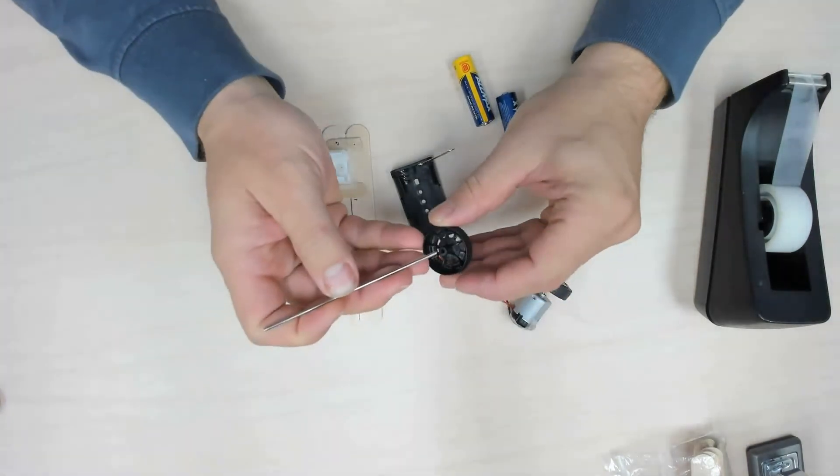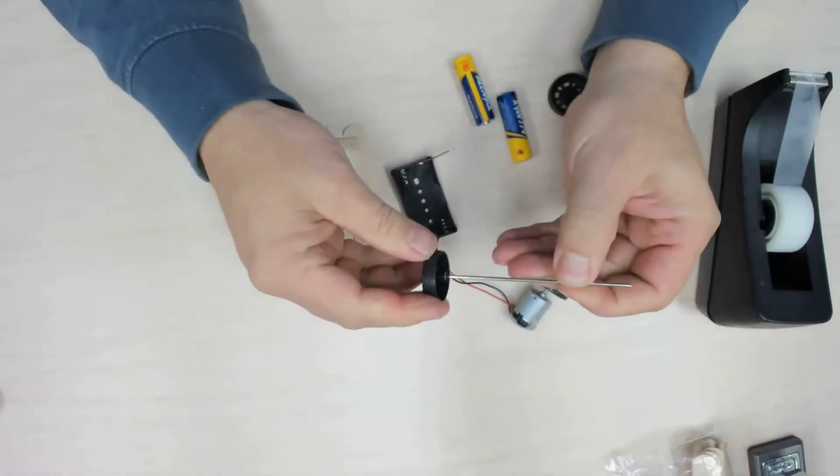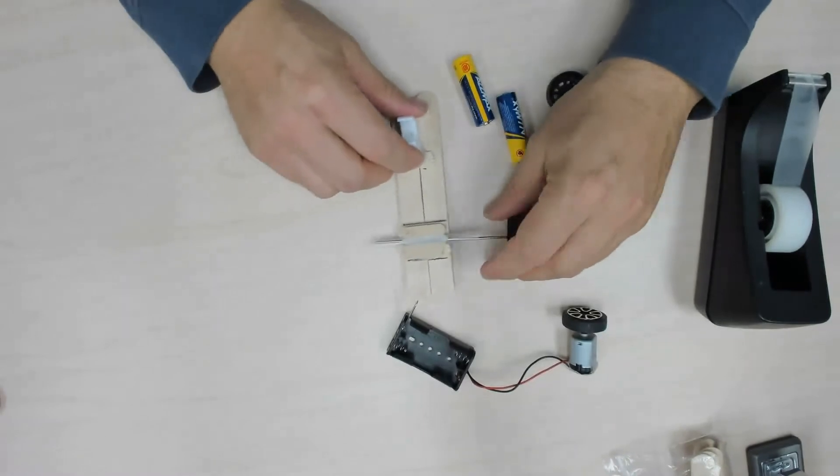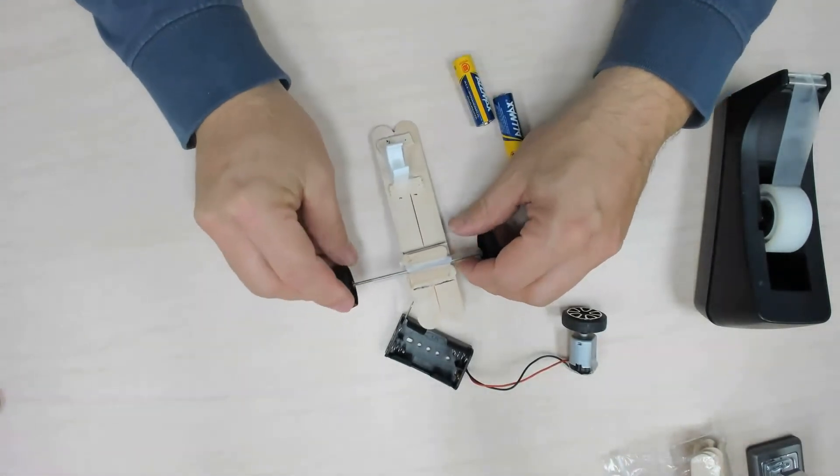So we'll take our axle and we'll insert the axle into the wheel, press firmly into there. Be careful with your chassis as you do your final construction to not break any of your mounts.